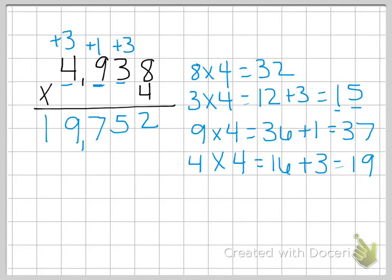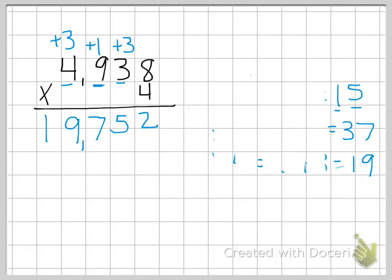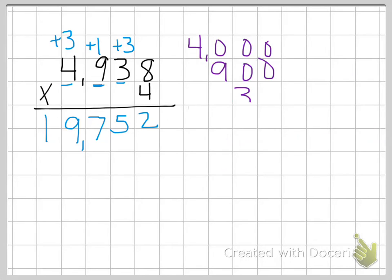So let's look at the way we can solve it using the partial products. Again, we're going to break apart our larger number. So 4,938. And we're going to multiply each part by 4.